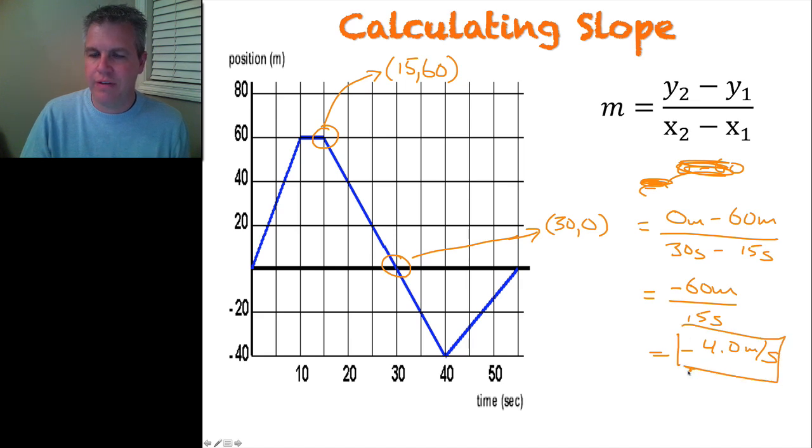Now, what does the negative mean? The negative doesn't mean that it's slowing down. Not at all, because this is a velocity. The negative means it's traveling in the opposite direction.